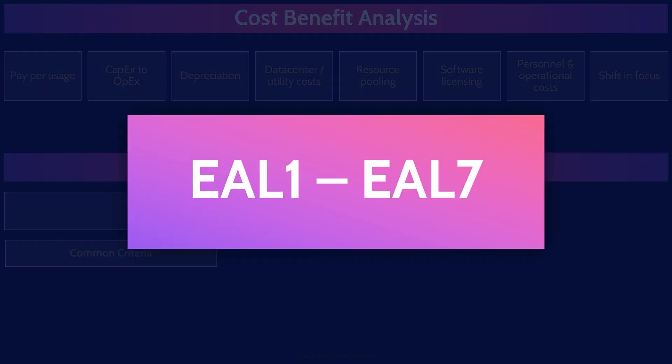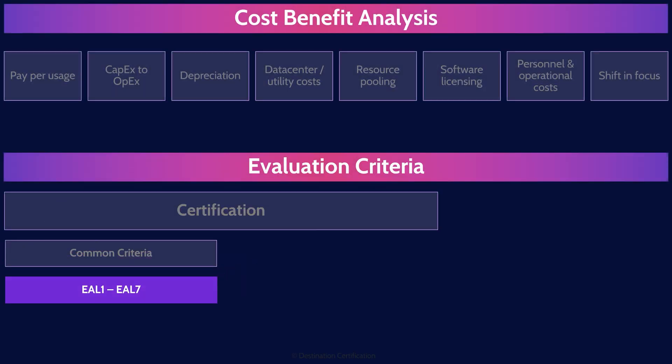After a product has been evaluated using Common Criteria, it will be given an Evaluation Assurance Level rating — an EAL rating — between 1 and 7. An EAL rating of 7 is the highest and indicates the most secure, and an EAL rating of 1 is the lowest.